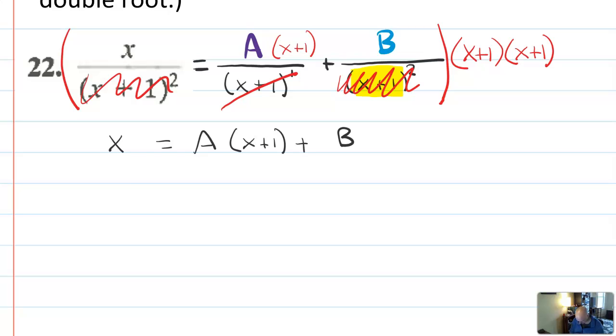Now, let's think about this. I could substitute a value in for x at this point. If x was equal to negative one, what happens? I would get negative one equals a times negative one plus one plus b. And that would tell me that negative one would equal a times zero plus b. And negative one would equal b.